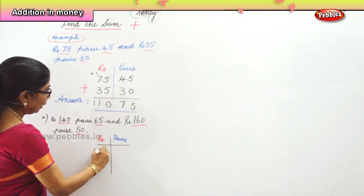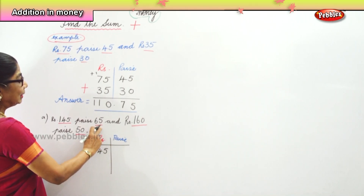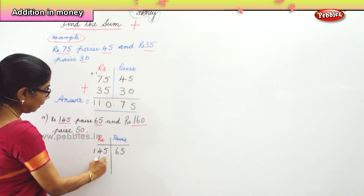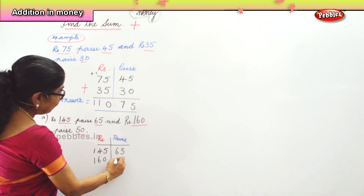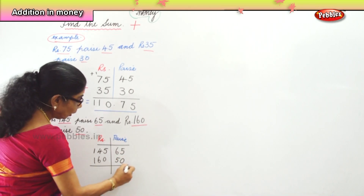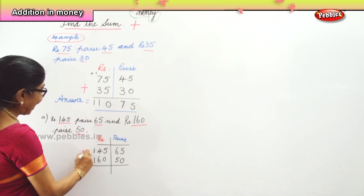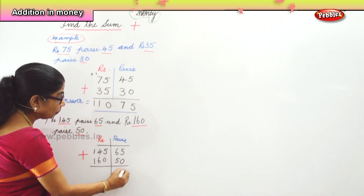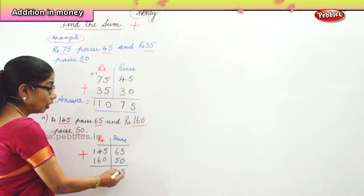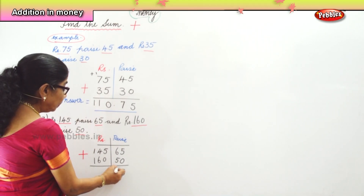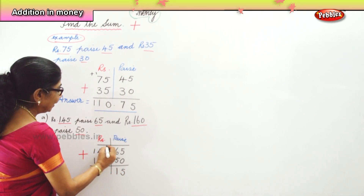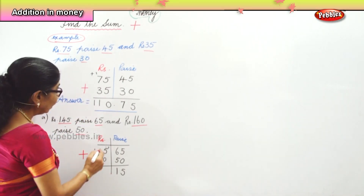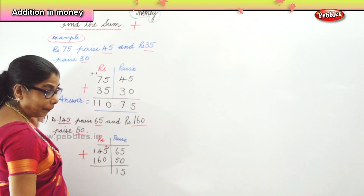Now we add. We have 160 rupees and 50 paise. Adding the paise column: 5 plus 0 is 5, and 6 plus 5 is 11. Since we cannot write 115, we take the carry-over 1 and add it to the rupees column, and write 15 paise.